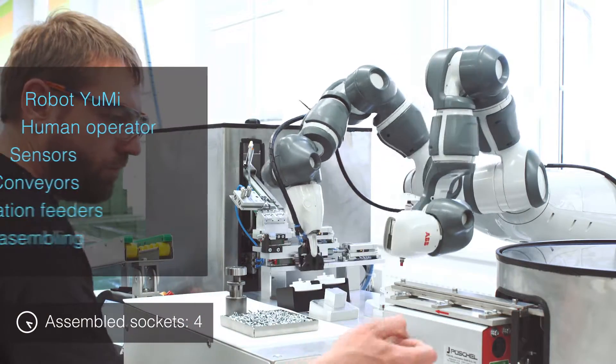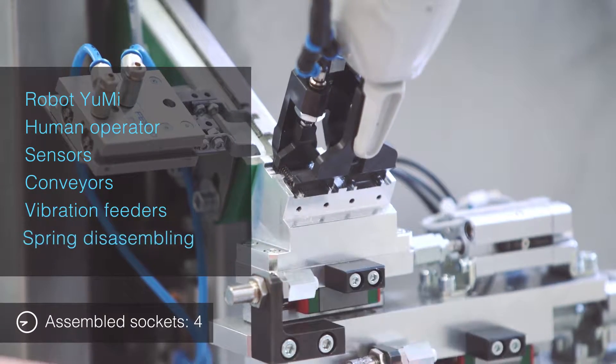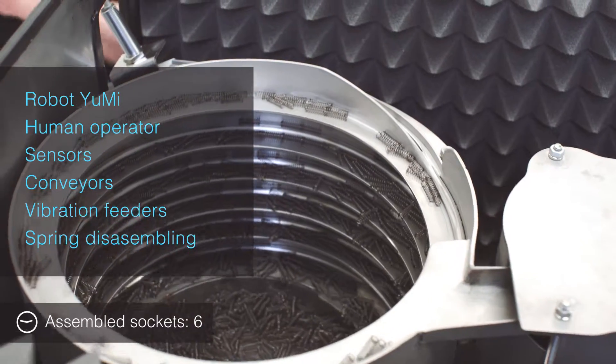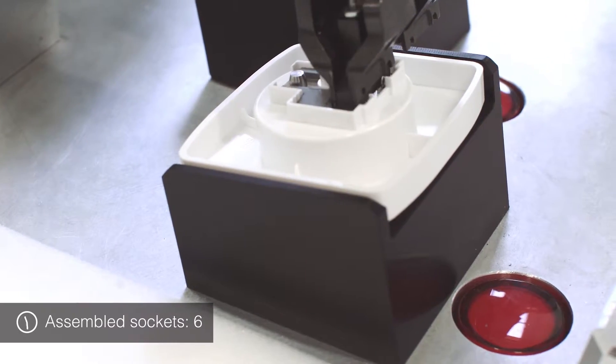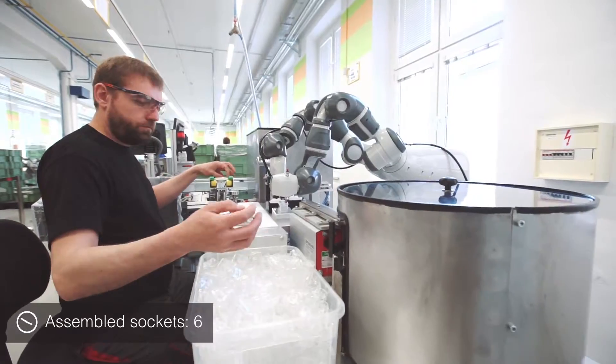The collaborative workstation consists of Yumi, a human operator, sensors, conveyors, vibration feeders, and a spring disassembling system. Yumi handles springs, child locks, and child lock covers.